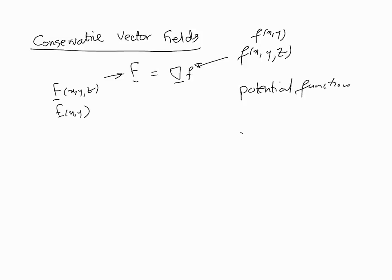Finding this potential function is equivalent to confirming the vector field is conservative, but it's a cumbersome task. Conservative vector fields have various properties — for instance, the fundamental theorem of line integrals applies to gradient vector fields, and a conservative vector field is a gradient vector field. So we can use the fundamental theorem of line integrals by identifying the potential function. But there are other ways to check if something is conservative.